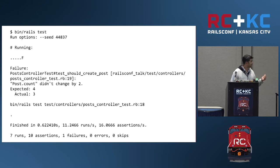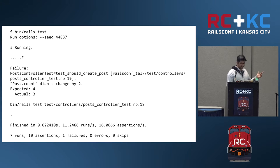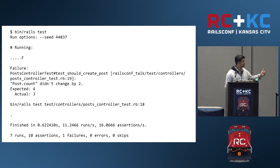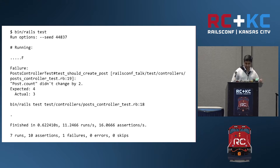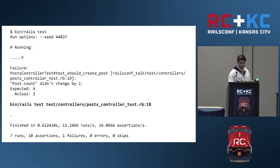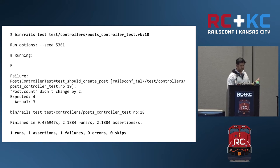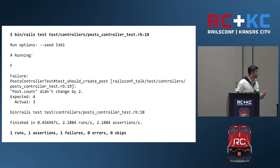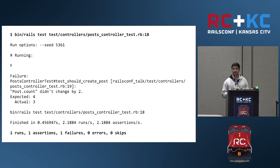With the new test runner, when a test fails, the output prints which test failed with the line number, but it also has a command alongside it. You can just copy that `bin/rails test` command with the test path and line number, and if you run only that particular line, it will run only that test. So you are able to basically copy-paste and run only those tests which have failed.